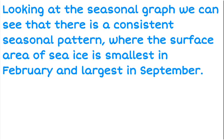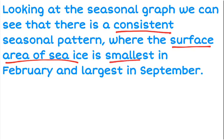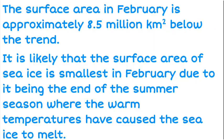Now let's write about this. The first thing is to note the consistent seasonal pattern. Looking at the seasonal graph, there is a consistent seasonal pattern. I'll put that into context — it's about sea ice, so the surface area of sea ice is smallest in February and largest in September. I've identified when it is high and when it is low.